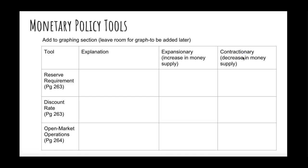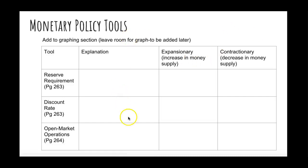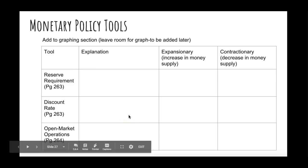Now flip to the graphing section of your binder and add a chart labeled 'Monetary Policy Tools.' Leave room for a graph to be added later. The Fed has three tools: the reserve requirement, the discount rate, and open market operations. In the explanation section, describe what each tool is. The reserve requirement and discount rate we've already discussed; open market operations you'll need to read about in your book on pages 263 and 264.